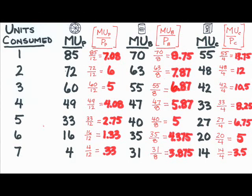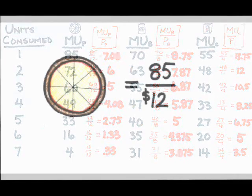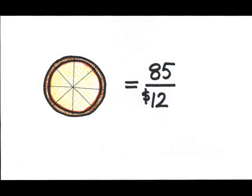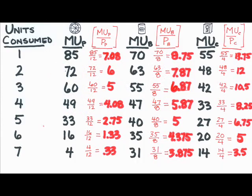This isn't too hard. All we need to do is divide each of the marginal utility figures by the price of that product. For example, that first pizza? Yes, it yields 85 units of added utility, but those 85 units will cost you $12. That means that the first pizza really yields 7.08 units of utility per dollar. Is this the best you can do?